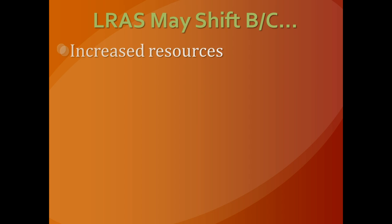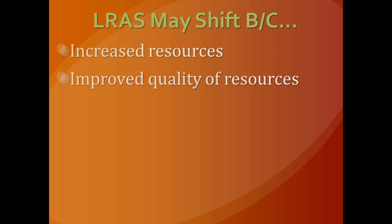The long-run aggregate supply curve can also shift, and we'll deal with these in more detail later in macro. As a preview: if you have more resources available, in the long run you can make more stuff, causing the long-run aggregate supply curve to shift to the right. If you have better, more efficient resources — like having an increase in effective resources — you'll see a shift to the right. Any sort of improved technology that improves worker productivity will also allow you to make more things with the same resources, shifting long-run aggregate supply or potential output to the right.